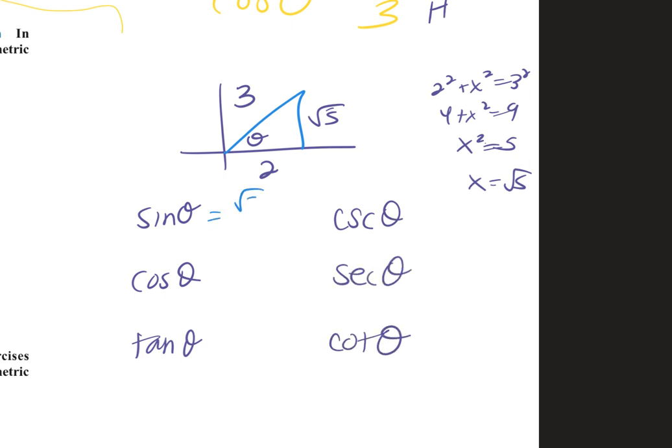So sine is opposite over hypotenuse. Cosine already have its adjacent to hypotenuse. Tangent is opposite over adjacent. And then we flip them. This would be 3 over root 5, which gets rationalized. This would be 3 over 2, 2 over root 5, which gets rationalized.